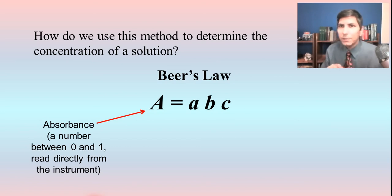Absorbance should always be a number between 0 and 1. It's going to be some kind of a decimal number between 0 and 1. If your absorbance is less than 0 or greater than 1, you've done something wrong and you need to recalibrate your experiment.